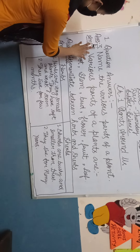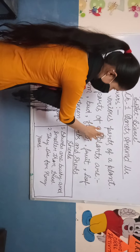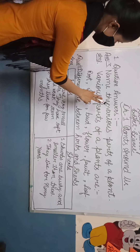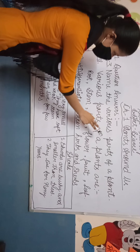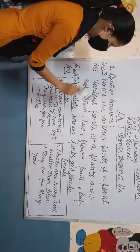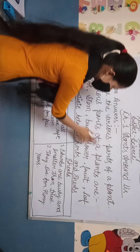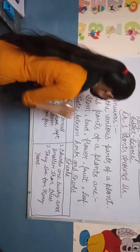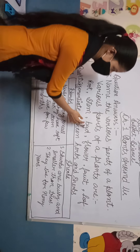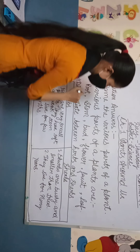Question 3: The various parts of a plant are root, stem, bud, flower, fruit, and leaf.